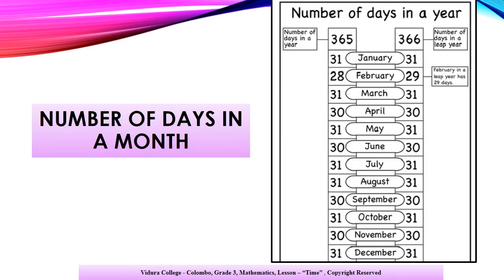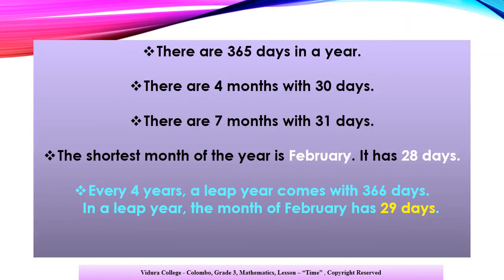Children, let's learn about the number of days in a month. There are 365 days in a year. There are four months with 30 days: April, June, September, and November. There are seven months with 31 days: January, March, May, July, August, October, and December. The shortest month of the year is February — it has 28 days. Every four years, a leap year comes with 366 days. In a leap year, the month of February has 29 days.